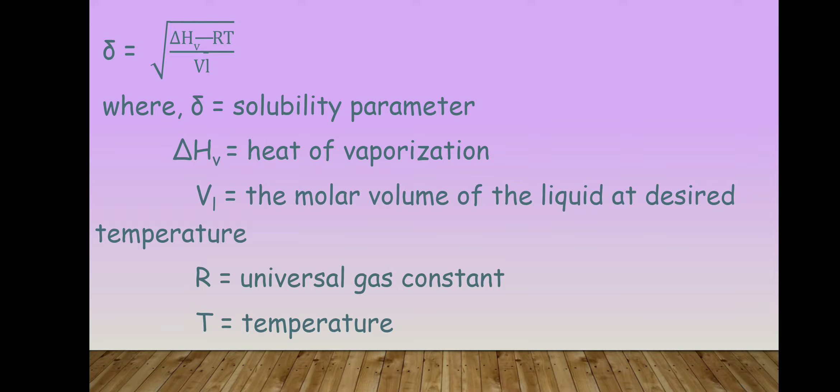Delta Hv is the heat of vaporization. Any substance, whether solid or liquid — if solid, it melts first and then vaporizes at a certain point. The heat required for vaporization is delta Hv — how much heat is needed for any substance to vaporize, that is delta Hv.